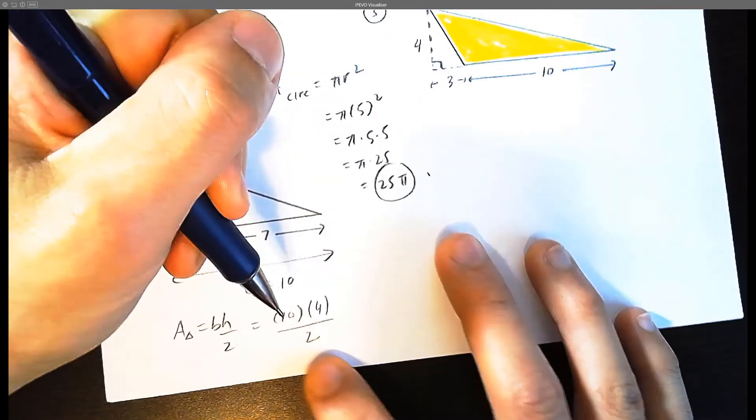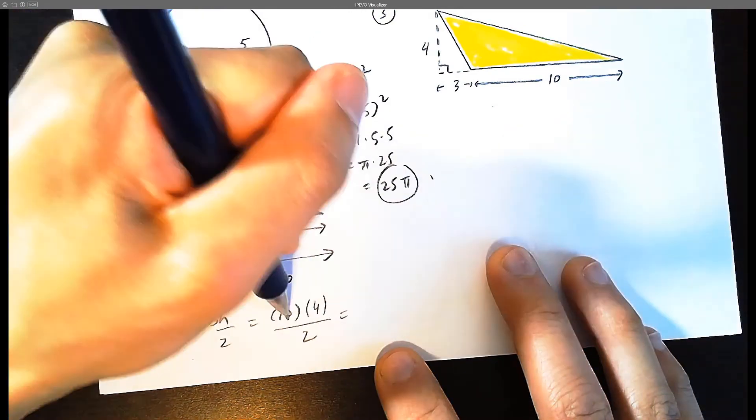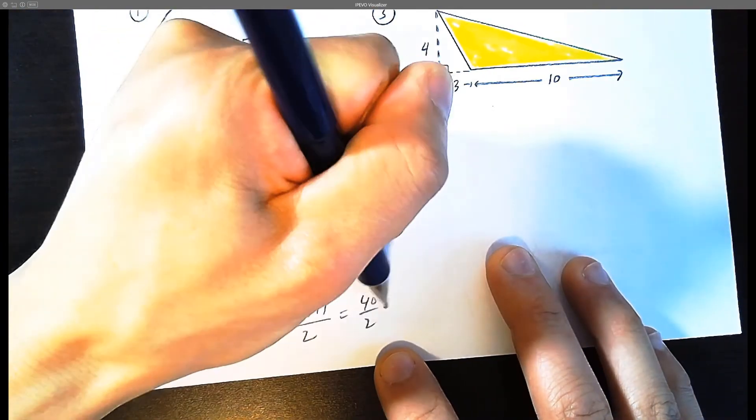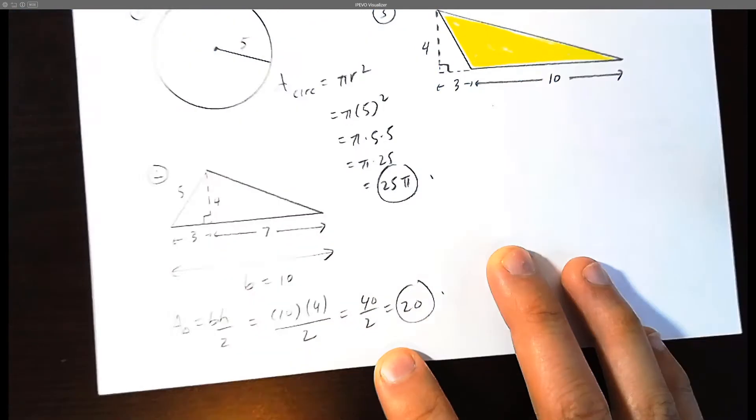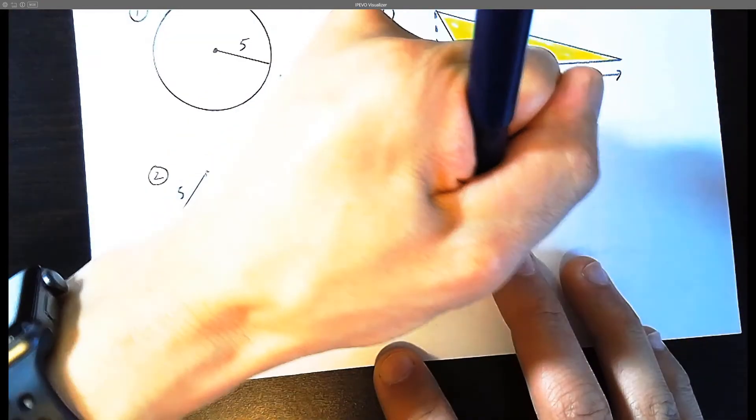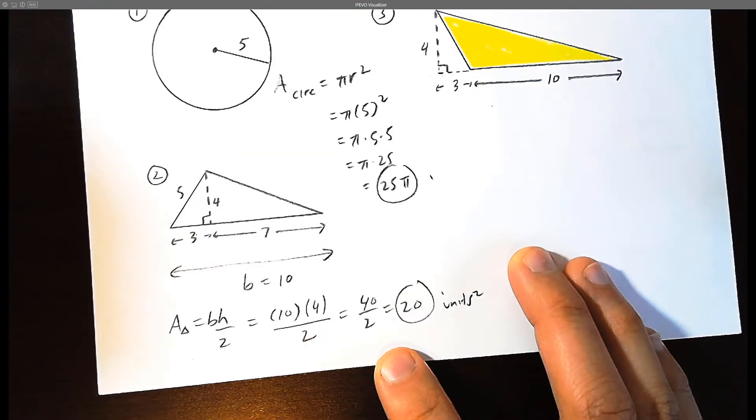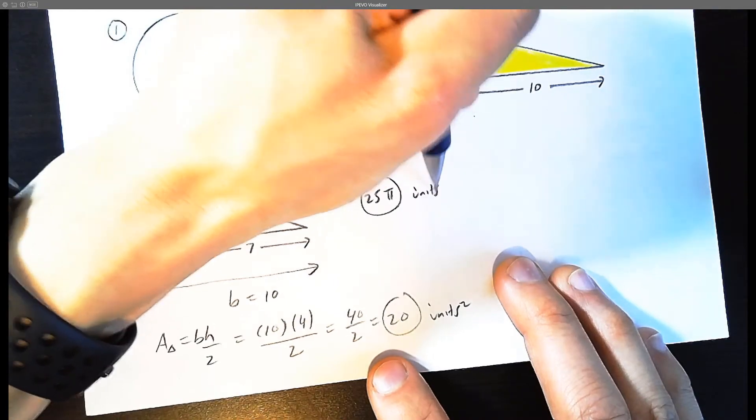Base times height divided by 2. So the answer is, 10 times 4 is 40, divide by 2, which is 20. It's going to be 20 units squared. And the previous example would also be units squared.